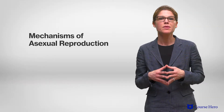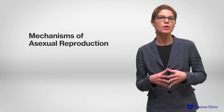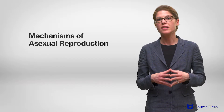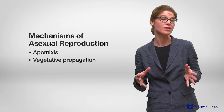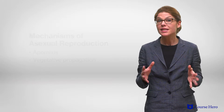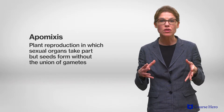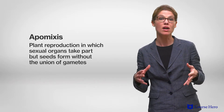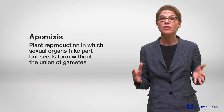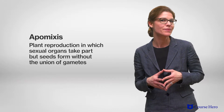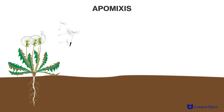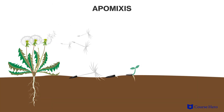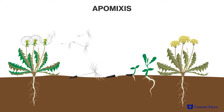The main mechanisms of asexual reproduction in plants are apomixis and vegetative propagation. Apomixis is reproduction in which sexual organs take part but seeds form without the union of gametes. With this process of reproduction, the seeds give rise to an embryo that is genetically identical to the mother plant.